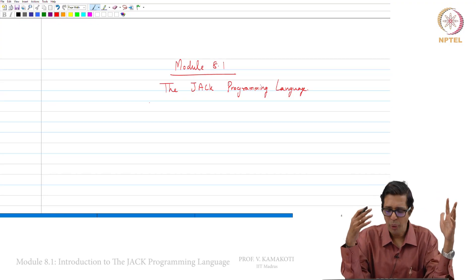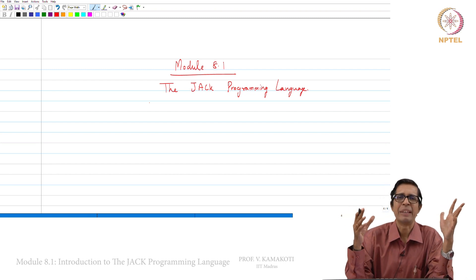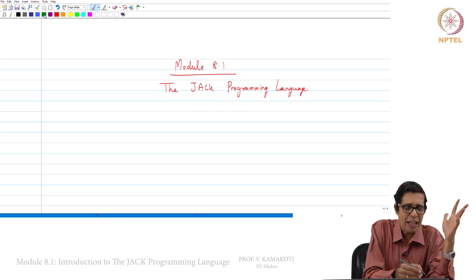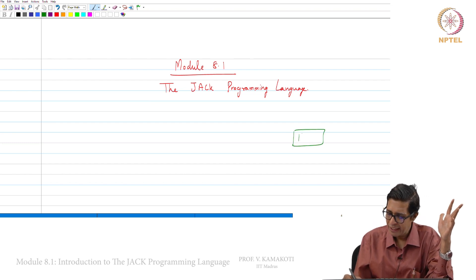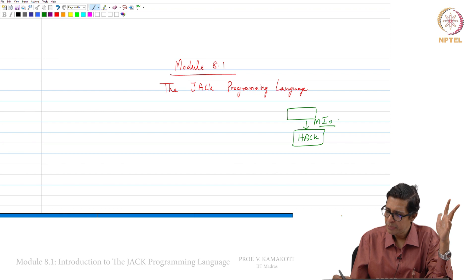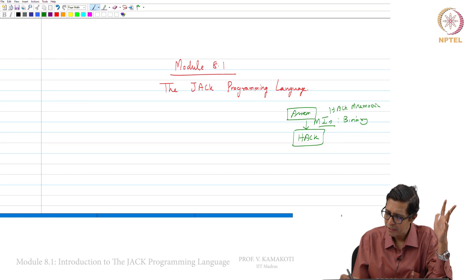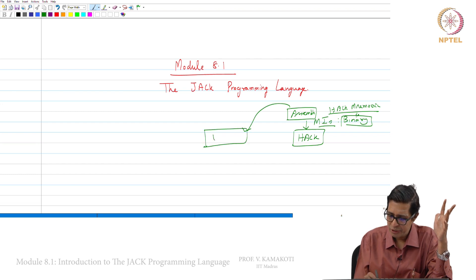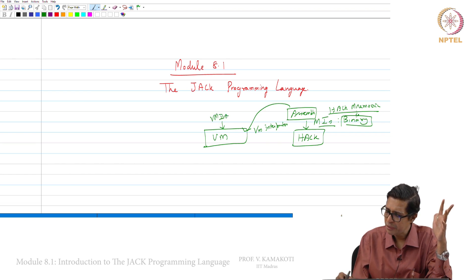Welcome to module 8.1. We now move on to the JAK programming language. To recap what we have done: we created a machine called Hack with machine instructions in binary. There was a Hack mnemonic, and we wrote an assembler to convert from Hack mnemonic to binary. Then we defined a virtual machine and wrote a virtual machine interpreter which converts from the virtual machine ISA to Hack mnemonic.